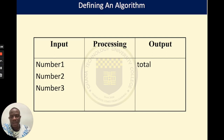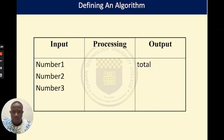Anytime you are expecting an input from the user, create a container, receive the item from the user, and put it into the container. When everything is done, we also create another container called 'total', which will house the sum of these three numbers. Once you have identified what the user will supply to your software — which is the input — and what your software is expected to give out to the user — which is the output — we now need to identify what will be in the processing column, which should be the actual task you have been asked to do.